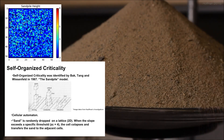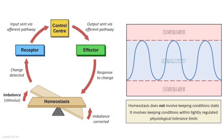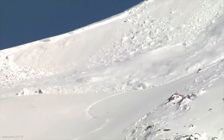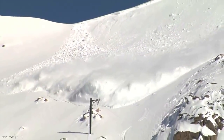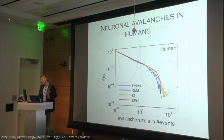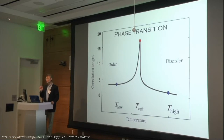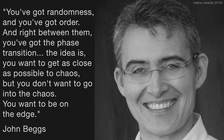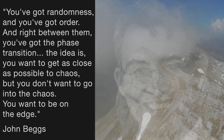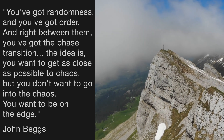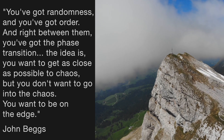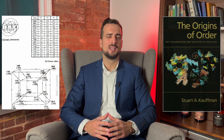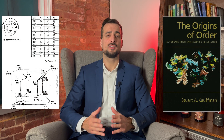For living organisms maintaining homeostasis, the whole game is harnessing changes and stressors to promote positive results, but without penetrating the vulnerable avalanche state where disturbances are out of control. Biophysicist John Beggs says: "You've got randomness and you've got order, and right between them you've got the phase transition. You want to get as close as possible to chaos, but you don't want to go into the chaos. You want to be on the edge." Researching the math behind evolving systems, biologist Stuart Kauffman observed that the rate of evolution is highest near the edge of chaos.